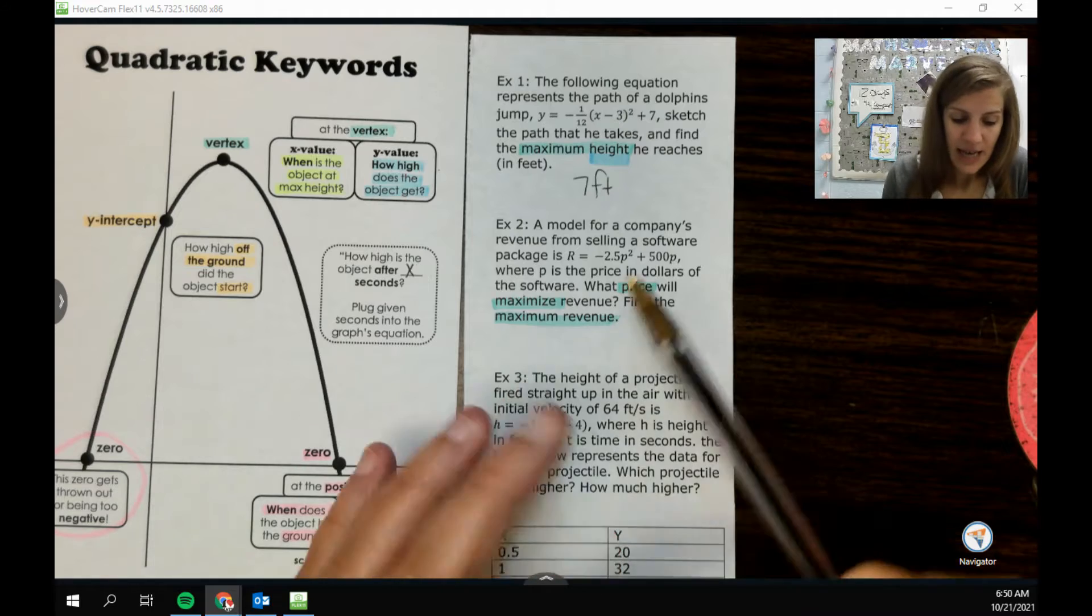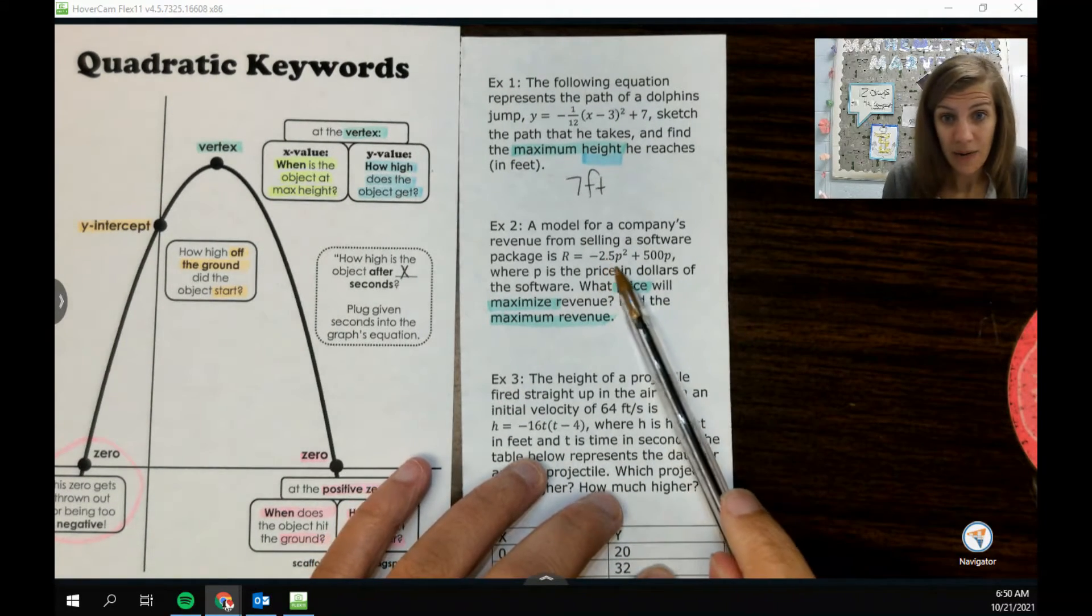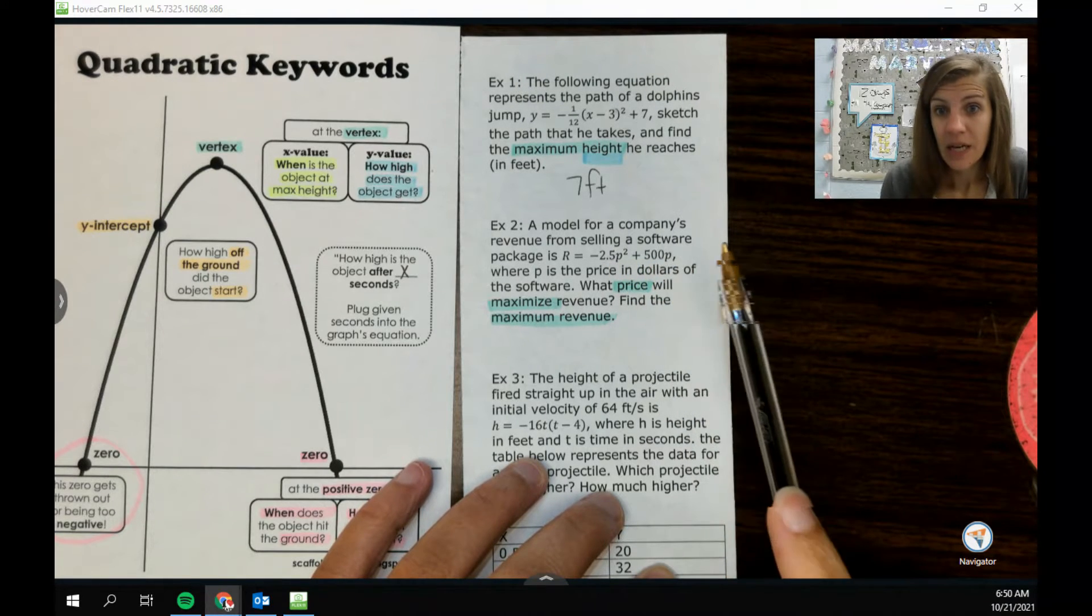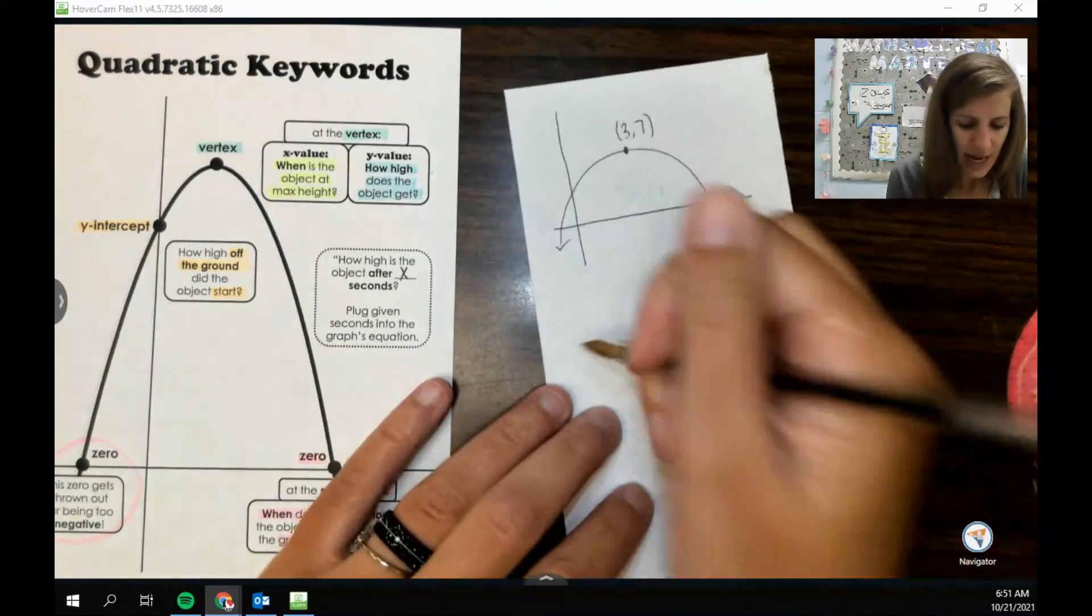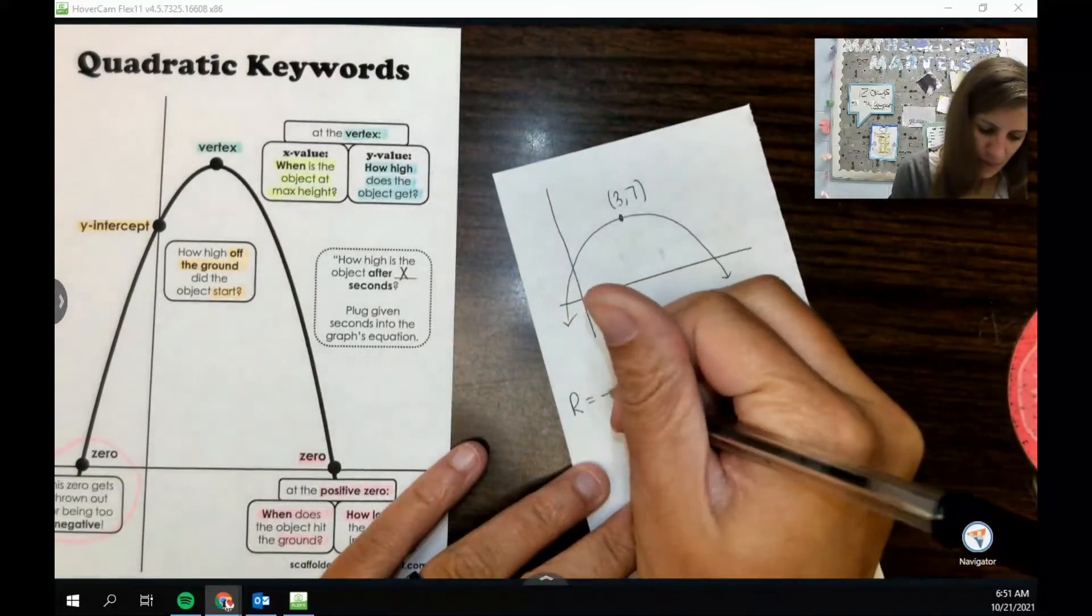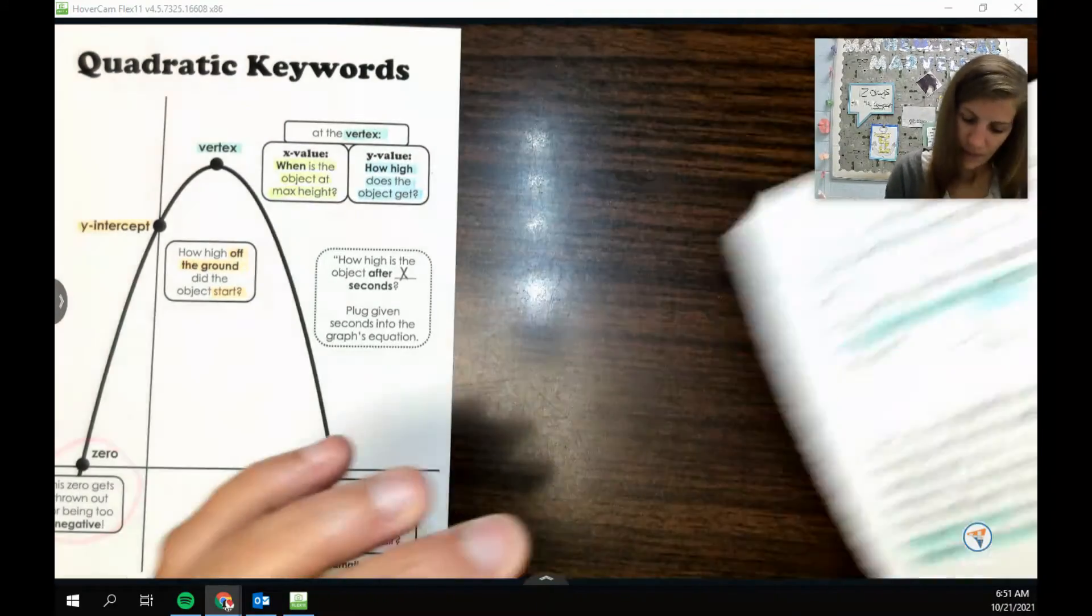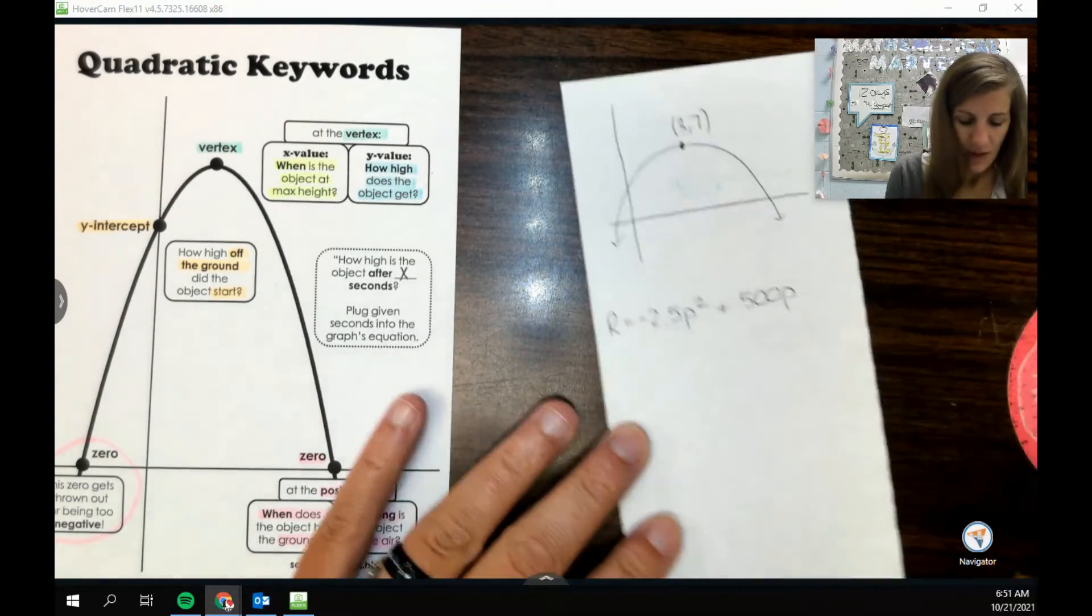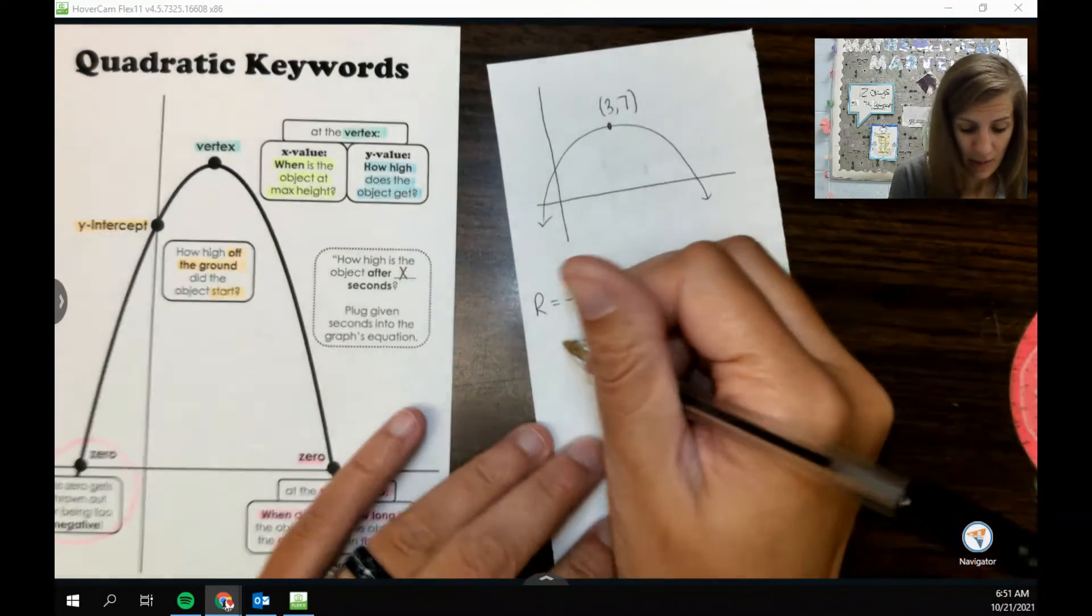However, I can tell that it's a pointing down parabola. Also I can tell right here we are in standard form. So when I'm in standard form, if I want to find the vertex, let's rewrite this little equation.